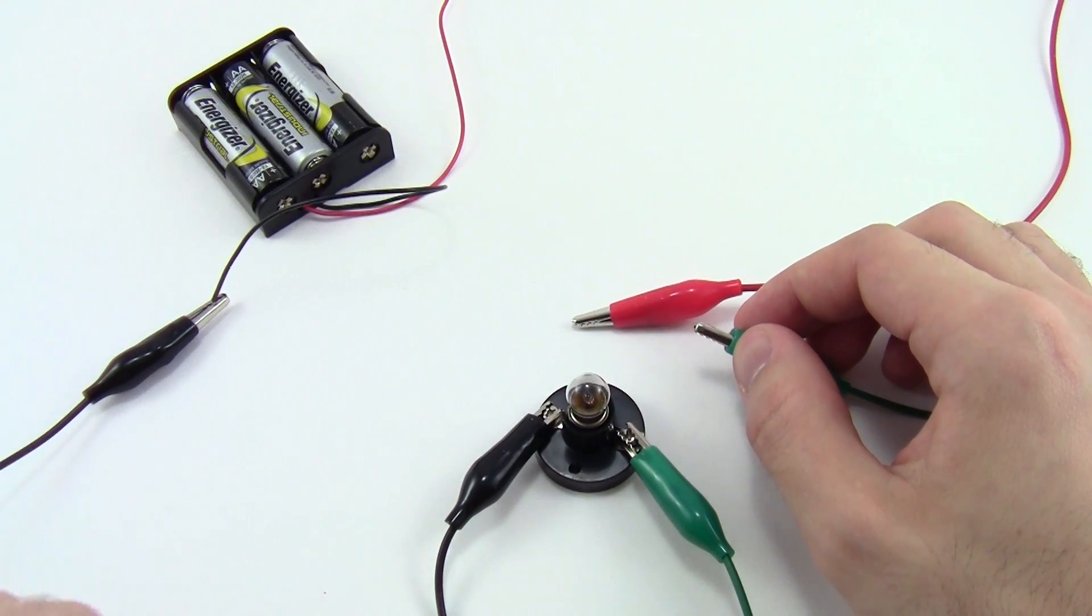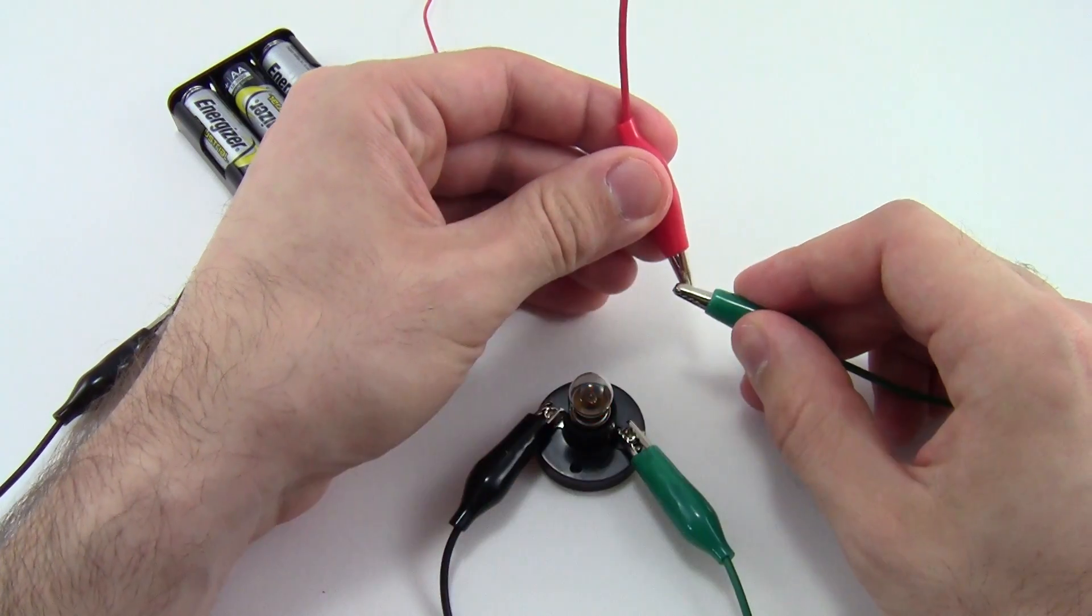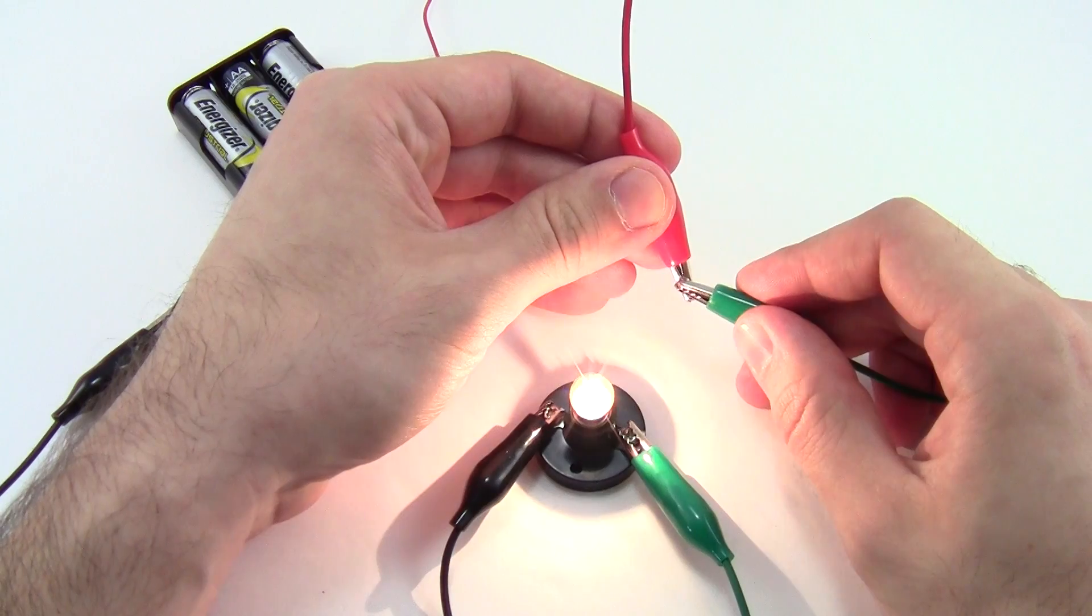And then back through the black alligator clip and wire to the battery pack. So check that your light bulb lights up when you touch these two alligator clips together.